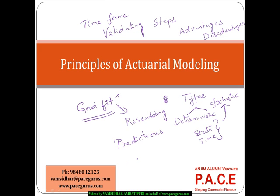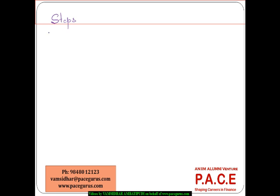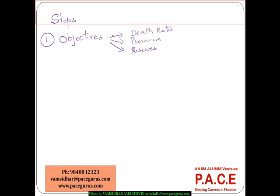How are the typical results of the model communicated to all the related participants and parties? Those are some of the key things that we look at as part of this particular topic on actuarial modeling. So whenever I am starting out with the key steps involved in the modeling process, I am starting out with the objectives. What are the key objectives intended as part of the creation of the model? Is my intention to predict death rates, to design premiums for a set of policies, to set up reserves, or to make investment decisions? What is my key objective in doing this actuarial model?